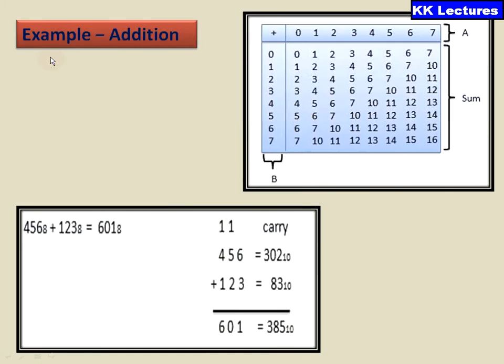Like that, let us see one example here. Example of addition. Now I would like to add 456 and 123 here. My resultant in the octal number system should be 601 base 8. Now let us see how it happens.